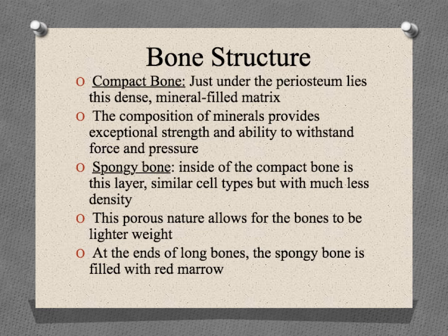Inside the compact bone is a thick layer of spongy bone — the name tells you pretty much exactly what it looks like. The cell types are very similar but they are much less closely packed, so there are pockets of space, giving it that spongy appearance with holes within the bone. This structure allows the bones to be lighter weight. If the entire bone were made of compact matrix and minerals, your bones would be so heavy it would be virtually impossible to move around.